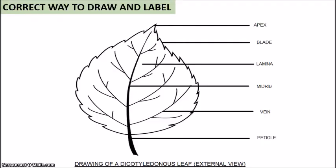So let's look at an example here. We have the correct way to draw and label. You can see that there is no sketchy lines. The label lines are horizontal. They're on one side, the right side. There's no shading, and we have our title at the bottom of the drawing. And you can see that the actual words are all printed. They're all in capital letters.